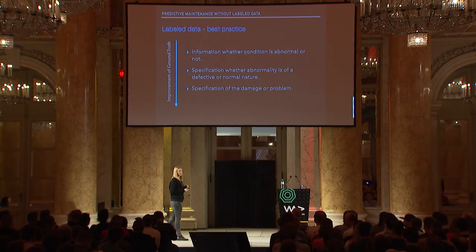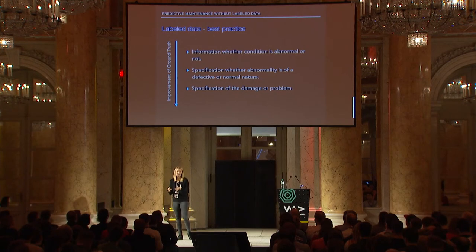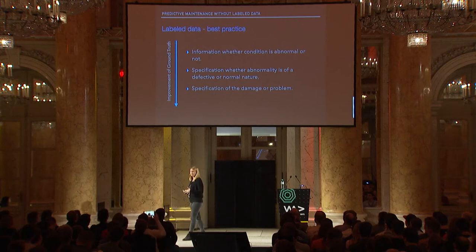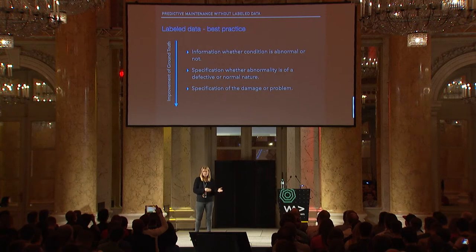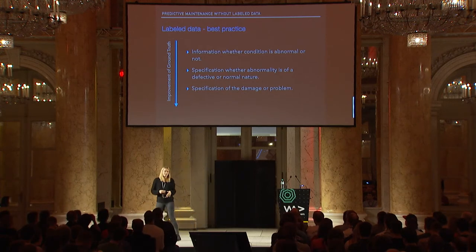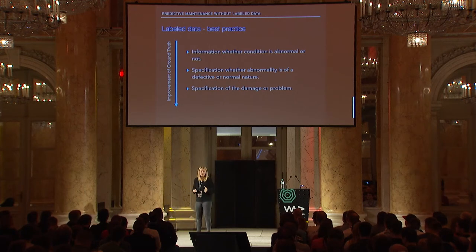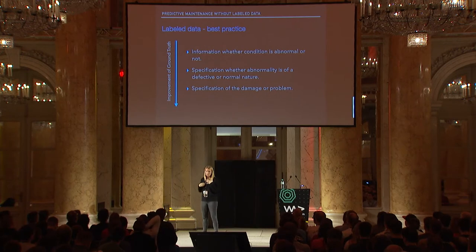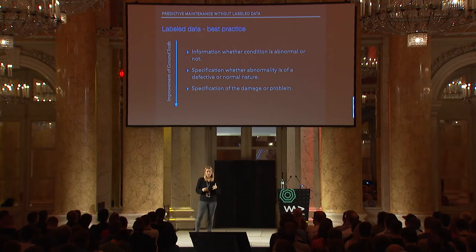In terms of a rule of thumb: good labeled data means a good ground truth — really telling the machine what's actually happening. Is it broken or not? That's the basic information. Even better if you can say whether the abnormal parts are defective or of normal nature — maybe it's just an outlier that doesn't mean the machine will break. And even better still if you specify whether you have damage or a problem occurring.